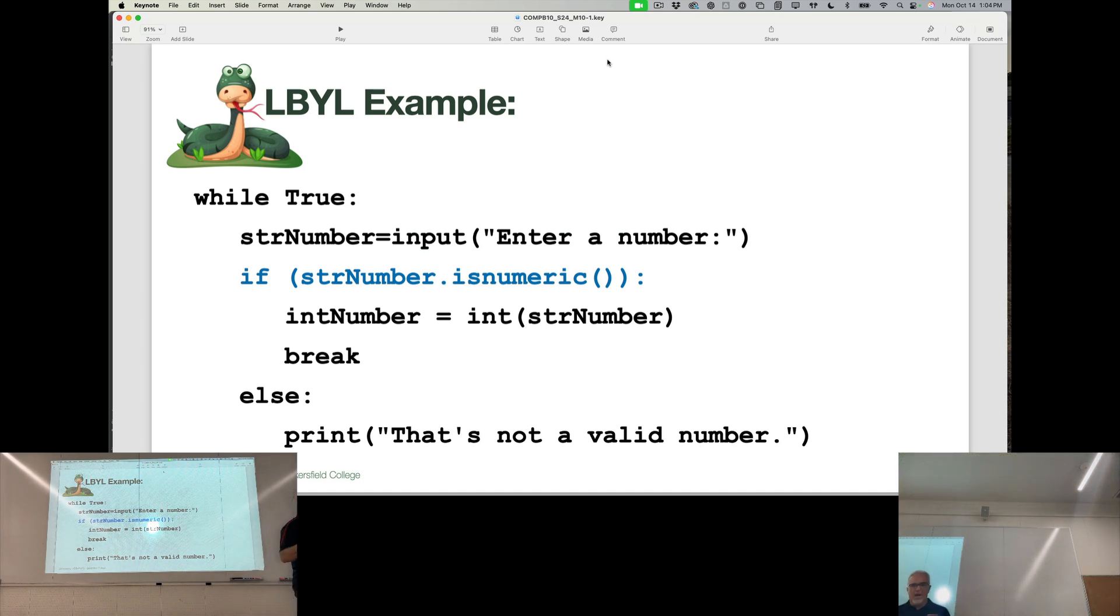So that's a good way to make sure that a user doesn't move on in the program until they've provided you the input they want. So it's a look before you leap with a little bit more oomph to it, because if I don't have them in a loop, then they've entered something that's not a valid number. It's not converted to an int, and all I've said is that's not a valid number. I'm moving on with the program, and they still haven't given me what I need.